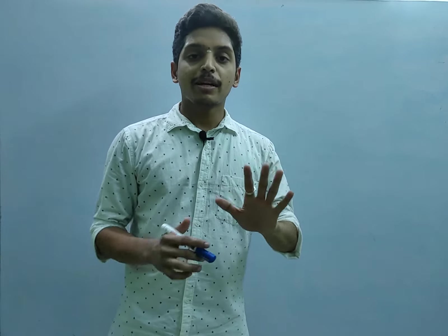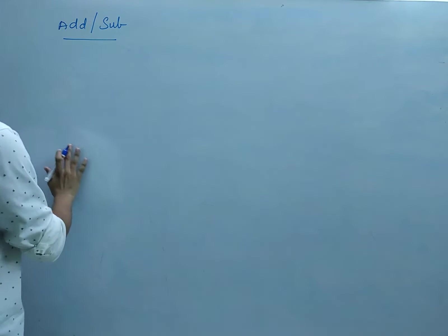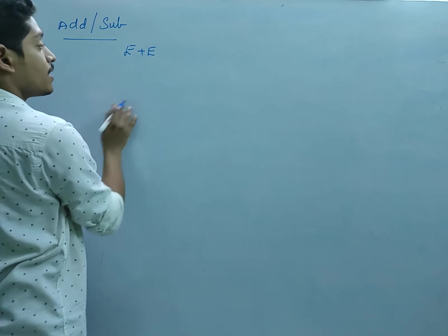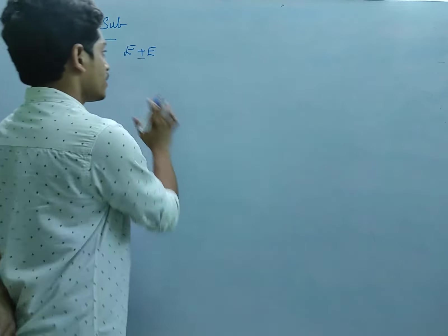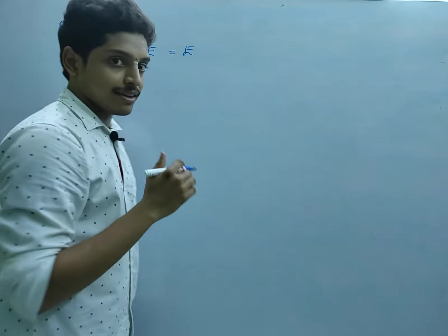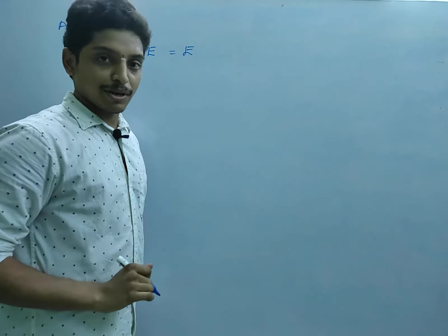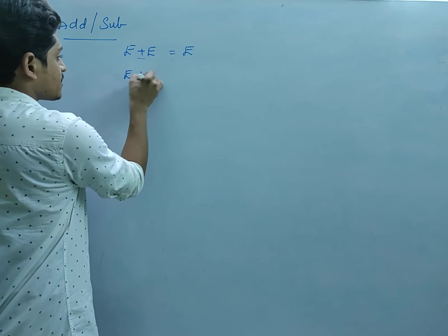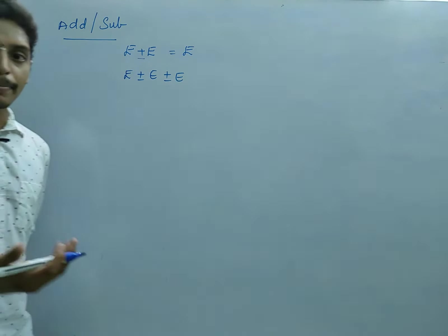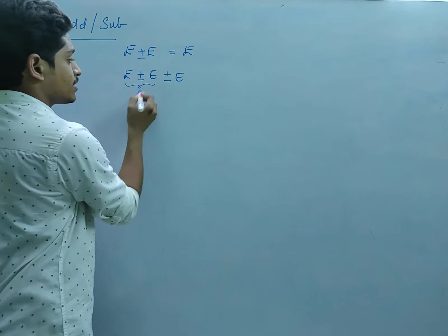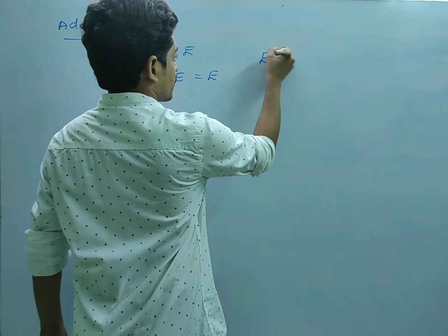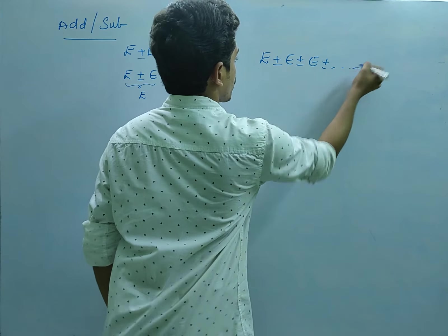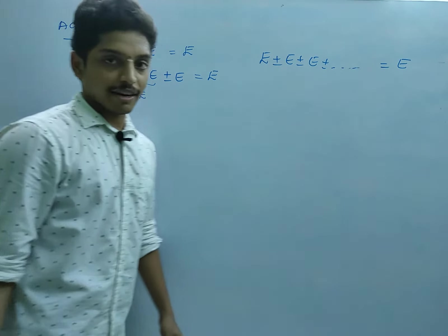Now let us discuss what happens when we add or subtract even and odd numbers. If you add or subtract even numbers — for example even plus even or even minus even — the result is always even. For example, 4+2=6 (even), 4−2=2 (even). This rule holds for any number of even terms added or subtracted: the result gives you even only.